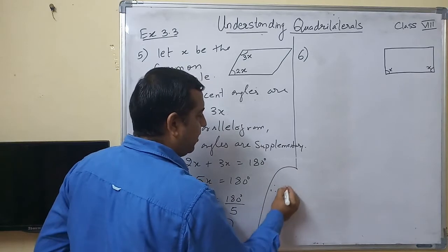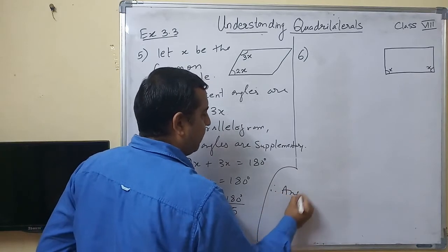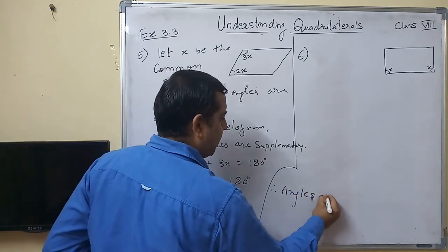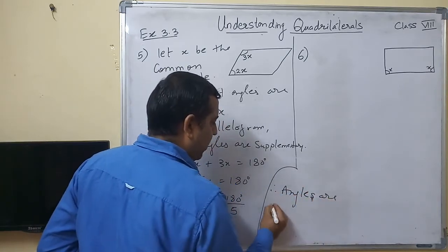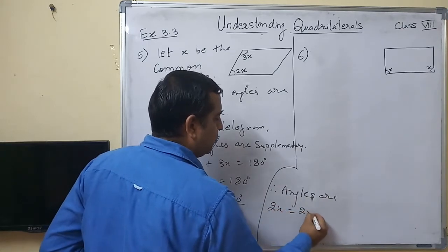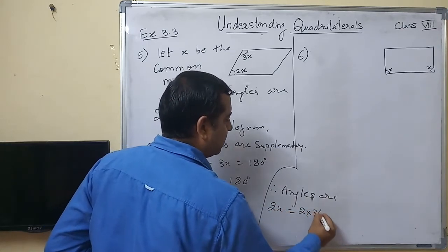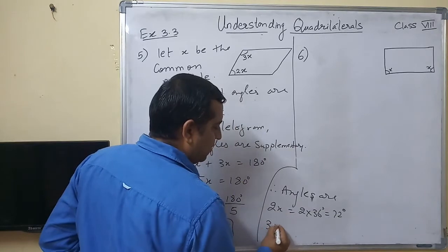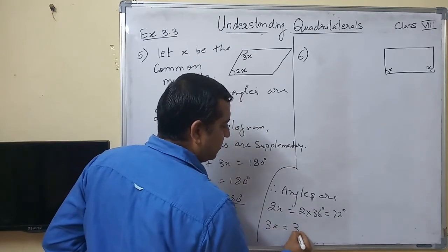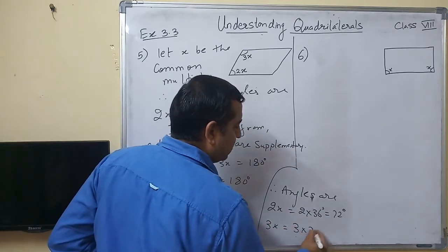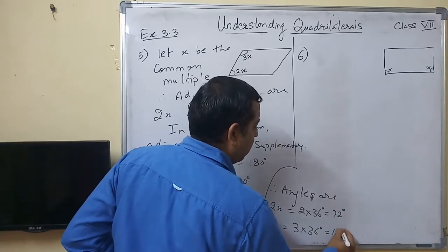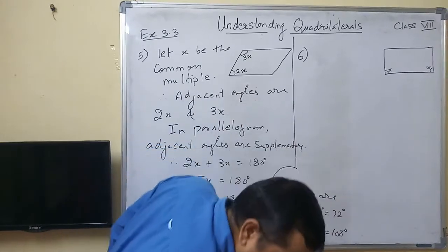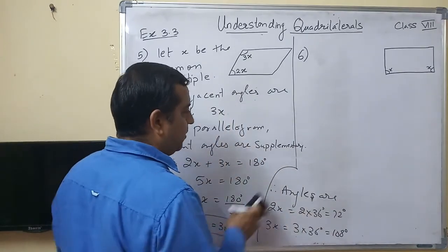Therefore the angles are: 2x means 2 into 36, which is equal to 72 degrees. Then 3x means 3 into 36, which is equal to 108 degrees. These are the two adjacent angles.